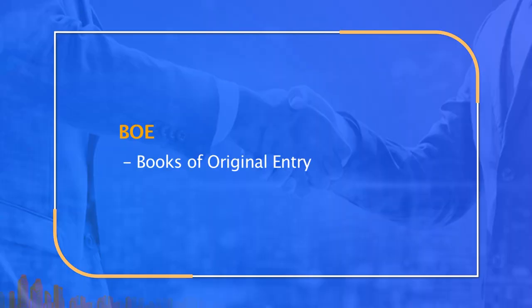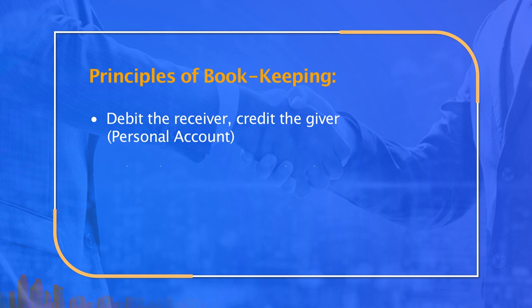Just after analyzing a transaction or event for its debit and credit effects, it is required to record them in a systematic way in the books of original entry — known as BOE — which hold a very important position in the accounting system of a business concern. It is very important to recapitulate the three basic principles of bookkeeping. Number one: debit the receiver, credit the giver — which is a personal account.